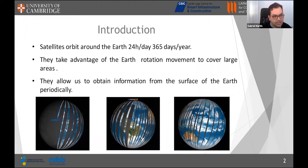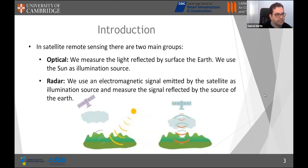We are going to focus on satellites. These satellites orbit the Earth and take advantage of the Earth's rotational movement in order to cover very large areas. For instance, Landsat has an orbit that goes from the north pole to the south pole, and after several days it covers the whole globe, allowing us to periodically obtain images of the surface of the Earth.